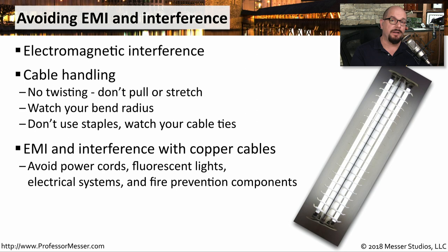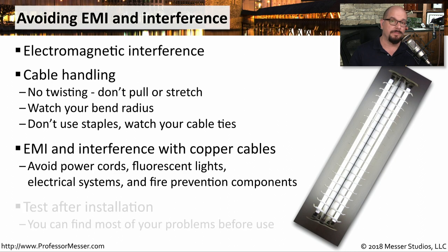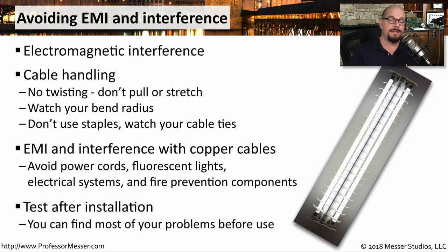You'll find electromagnetic interference anywhere there's a power source. So if you're running your cables near electrical outlets or near fluorescent lights, you'll find there may be an excessive amount of EMI on your ethernet network. One good way to test for EMI is to use a time domain reflectometer and see exactly how much signal and how much noise appears on that link.